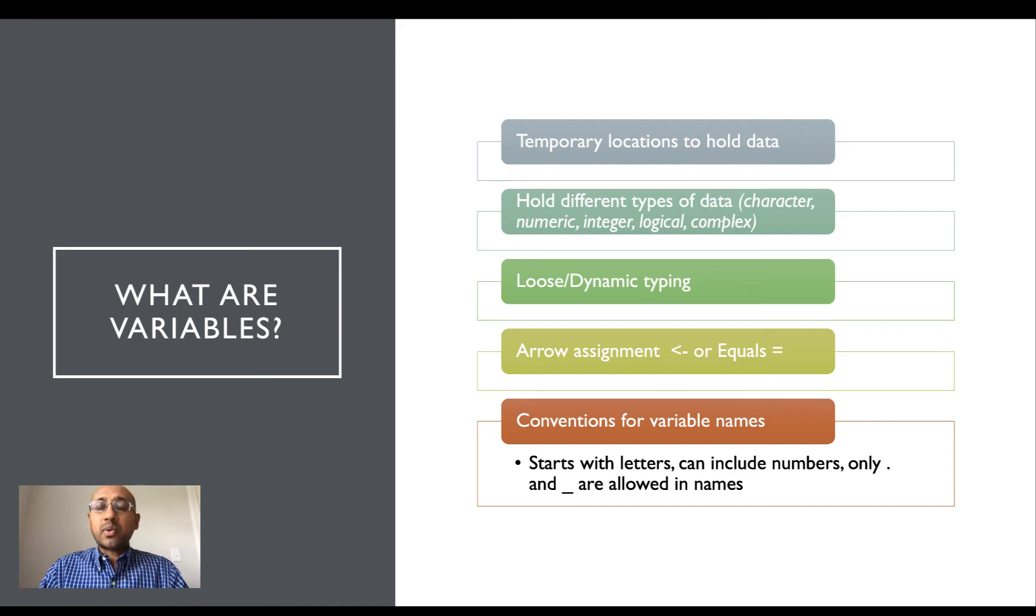Now a question that is frequently asked is if a variable holds a certain type of data, can it only hold that type of data? Once a memory location holds a type of data, can the type of data that that memory location hold change? And specifically for R? Yes, that same variable can hold different types of data.